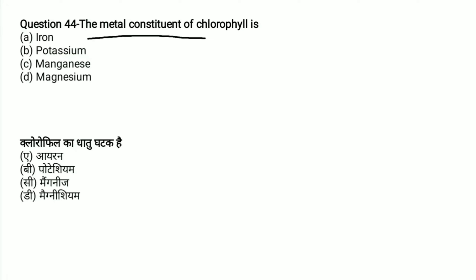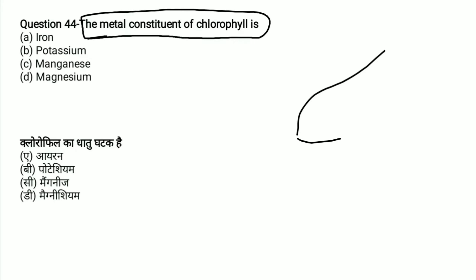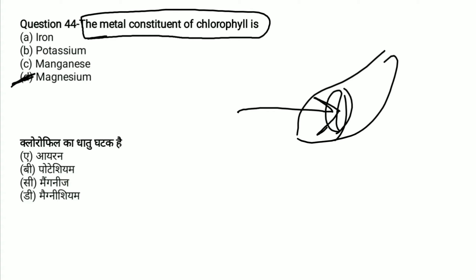The metal constituent of chlorophyll — chlorophyll is found in leaves. Which element is used as the metal constituent in chlorophyll? The answer is Magnesium. Magnesium is the metal constituent of chlorophyll.